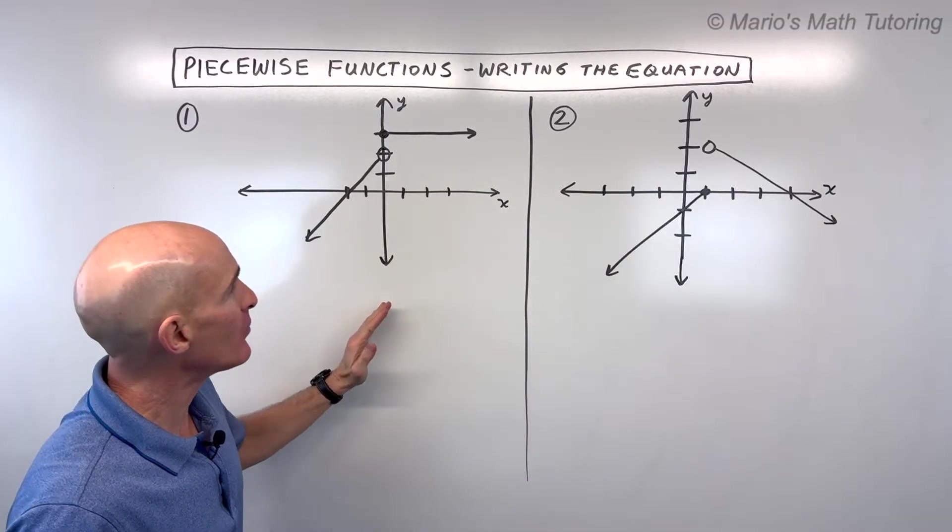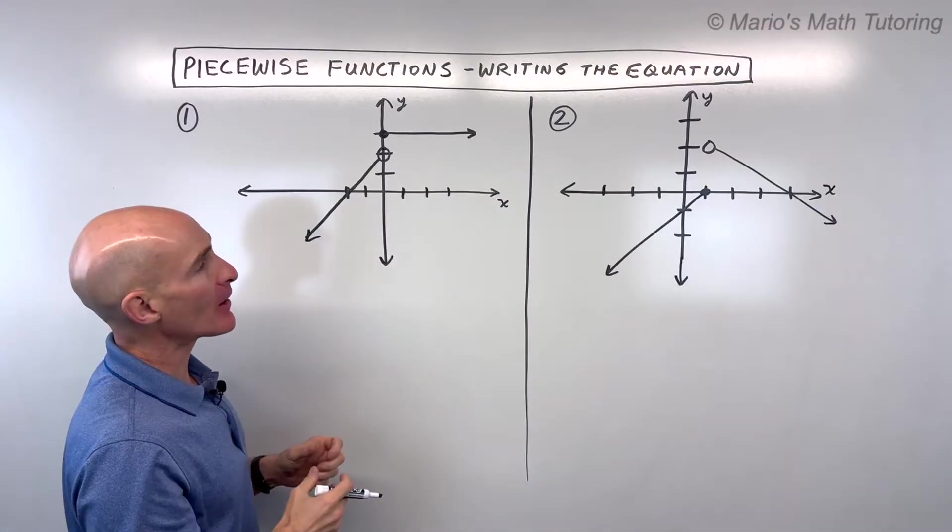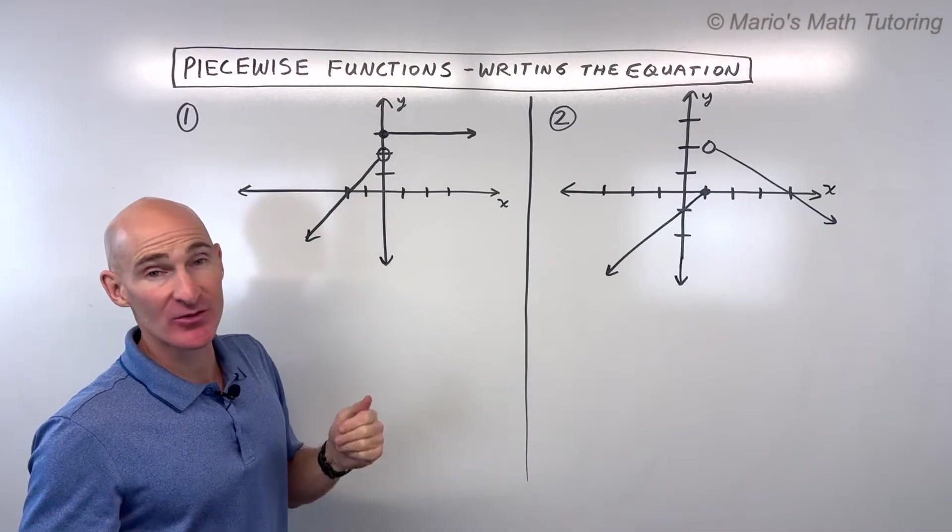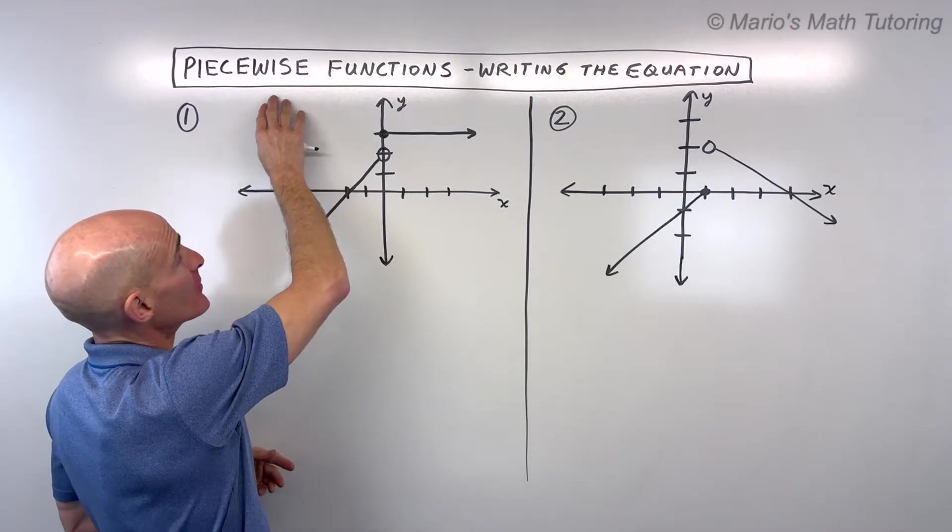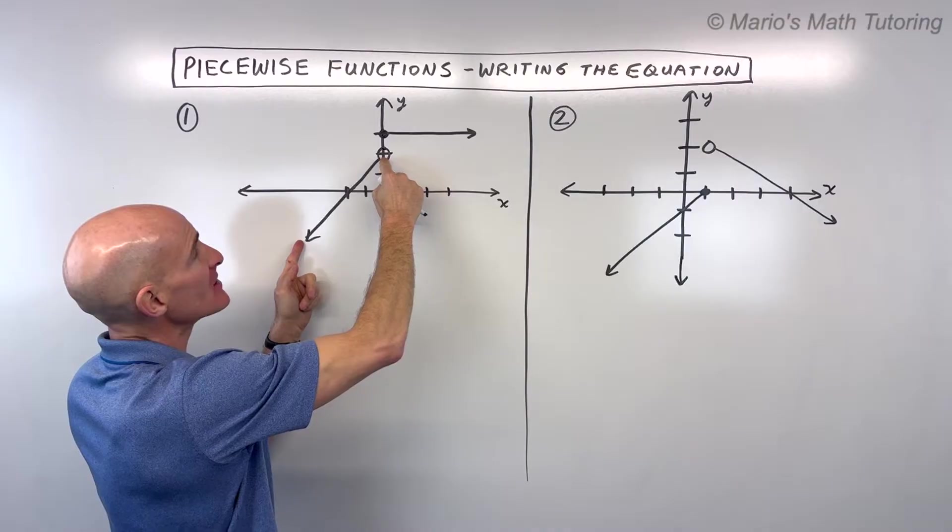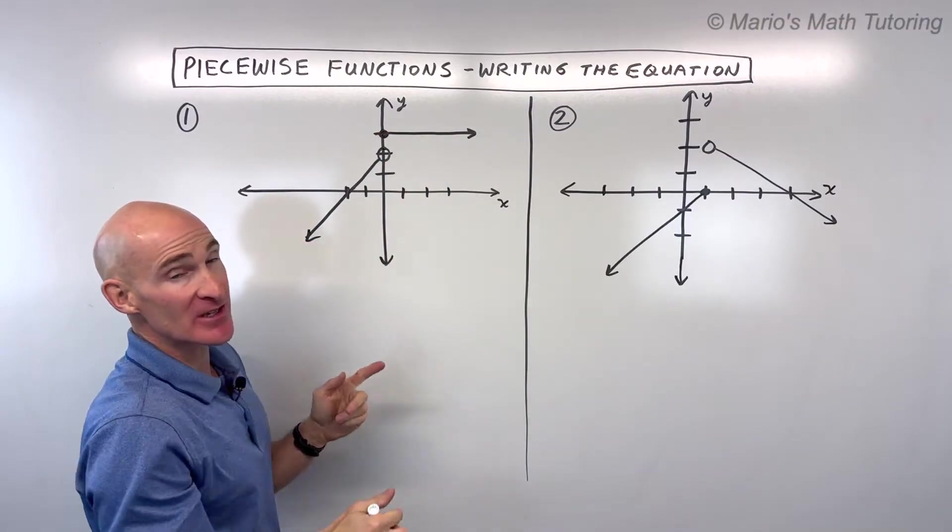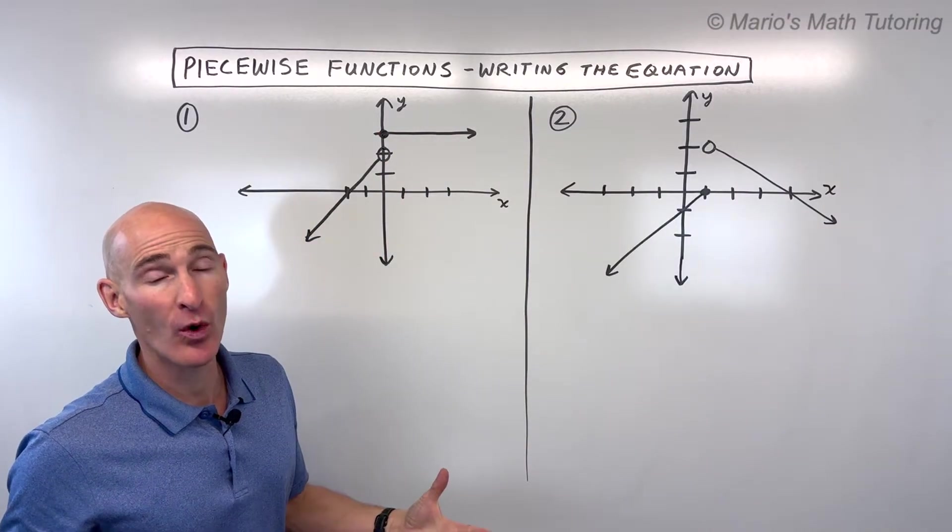The first example here we're given this graph. How do we write an equation to represent this graph? Well, you can see that this graph is actually in two pieces, and that's why they call it a piecewise function. You have this piece and then it jumps up to here and you have this piece. So it's almost like two different graphs in one.